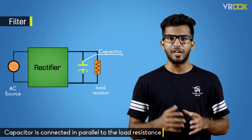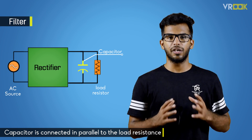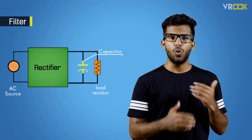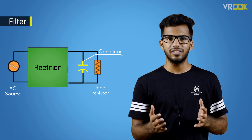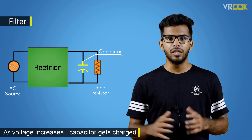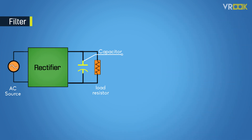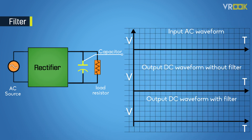The capacitor is connected in parallel to the load resistance and is used to smoothen the signal from the rectifier circuit. As you can see, when the voltage increases the capacitor gets charged, and when the voltage across the circuit decreases, the voltage across the capacitor also decreases. We can clearly see from the graph how a capacitor smoothens the output — though it is not pure DC, it is better than the rectifier output.